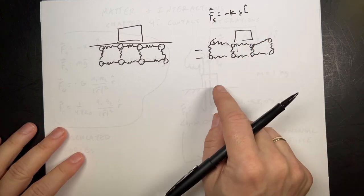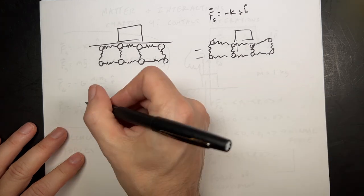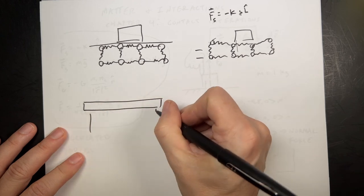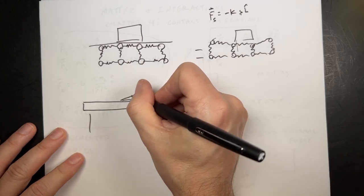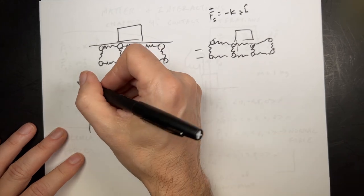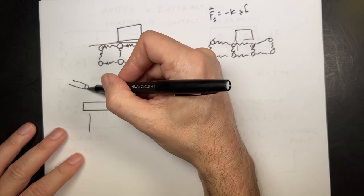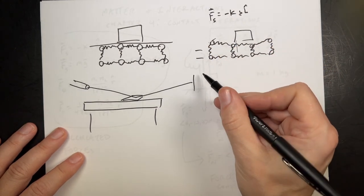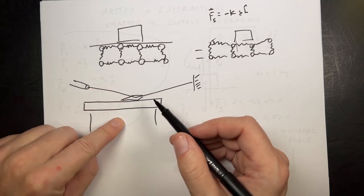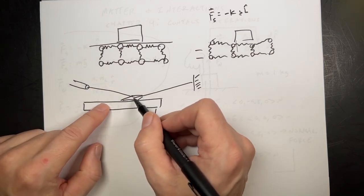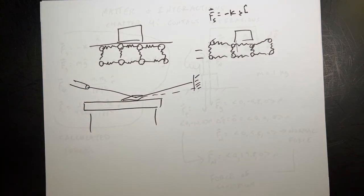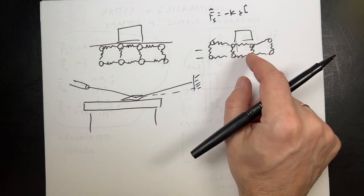There's a great experiment where you take a table, put a little mirror on there, then take a laser pointer and shine it so it reflects off. You look at where it hits the wall. As you push down on the table, the table actually bends — so the mirror deflects a little bit and the laser moves to different points. You can detect deflections in the table, which is caused by this essentially.